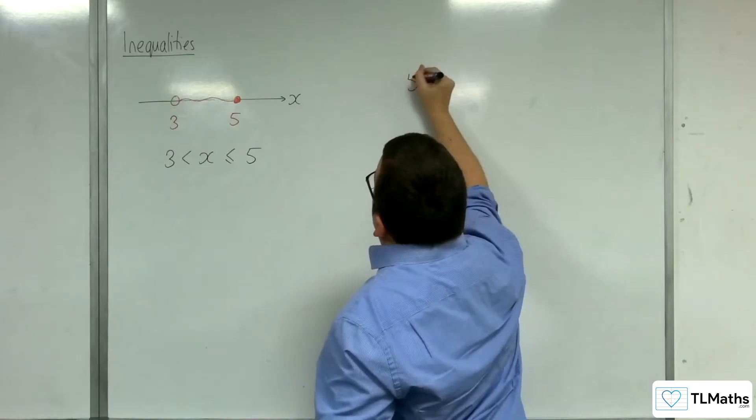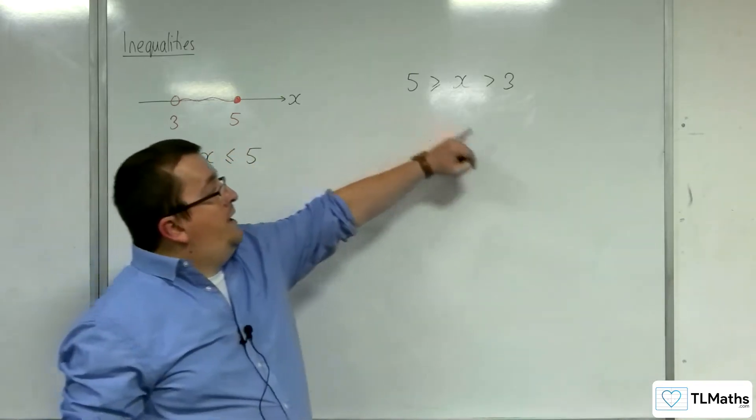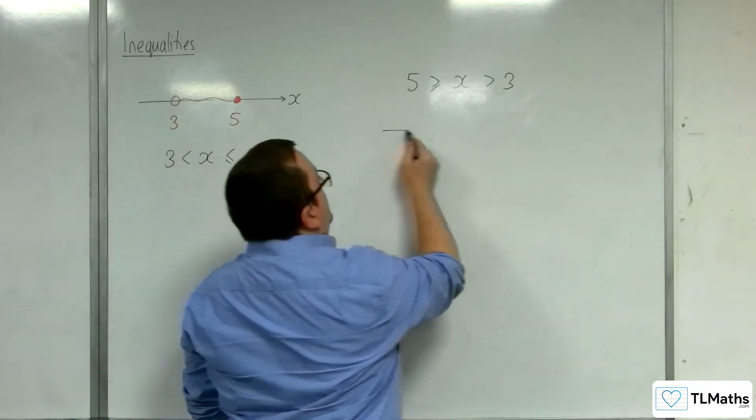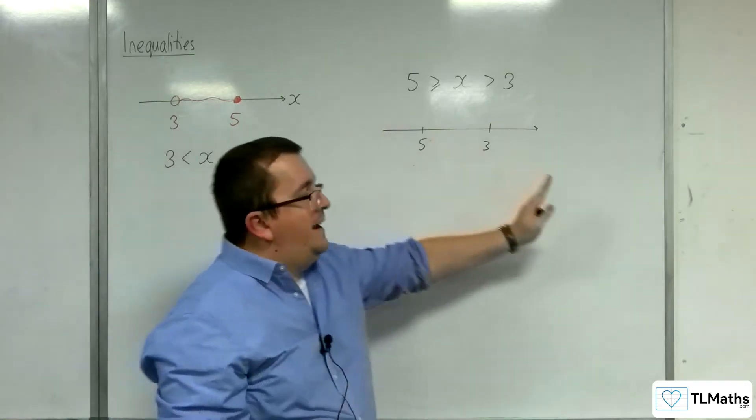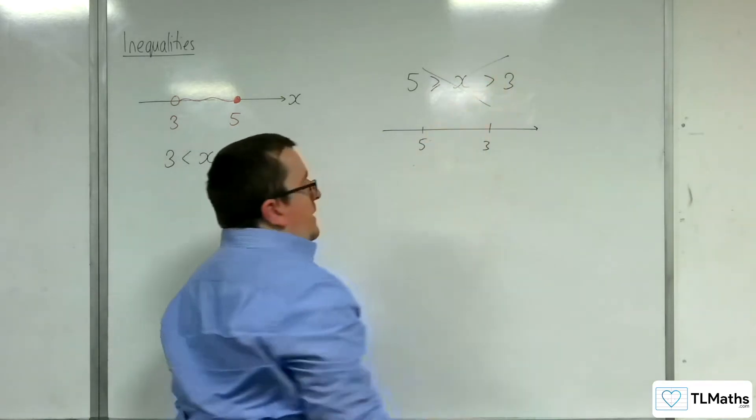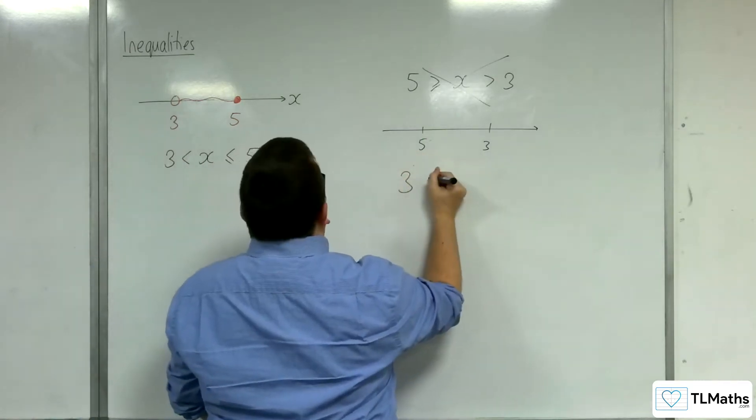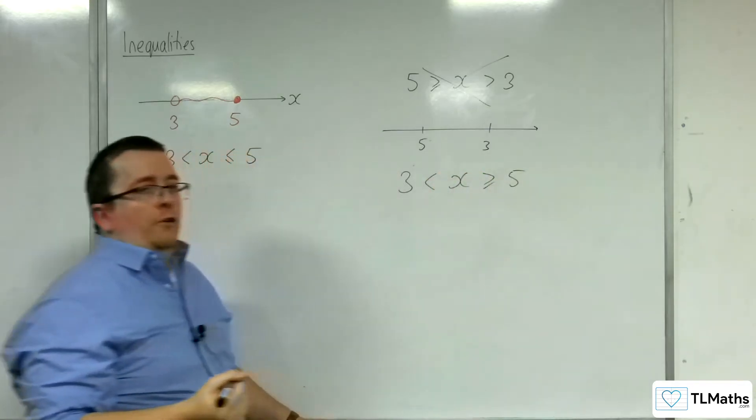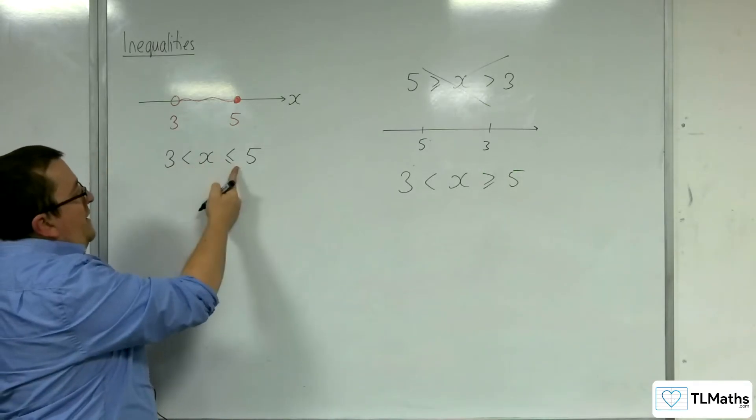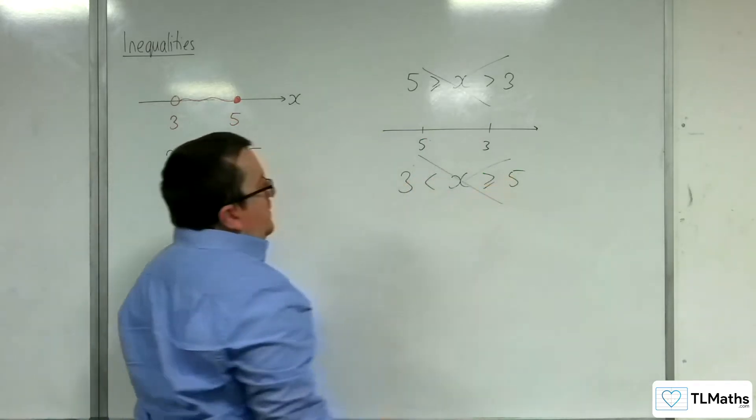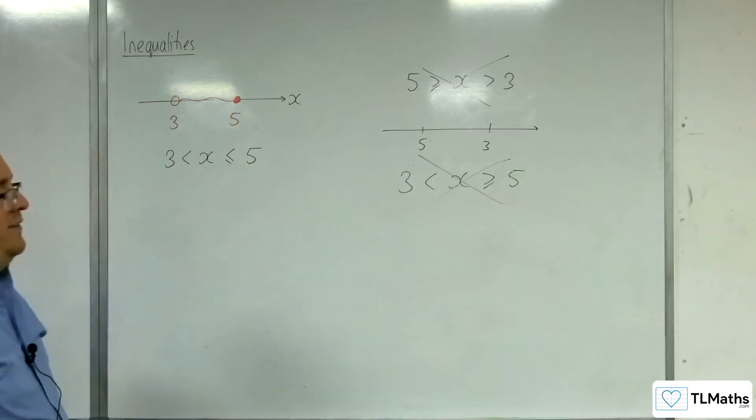We wouldn't write this as five is greater than or equal to x is greater than three. Although there's nothing really wrong with this, when you draw a number line, you don't put five to the left of three. We always go from the left to the right in ascending order. So we don't really want to write it like that. Also, whenever you're writing inequalities like this, please don't get mixed up with things like this. There shouldn't be any muddling of the direction of your inequalities.